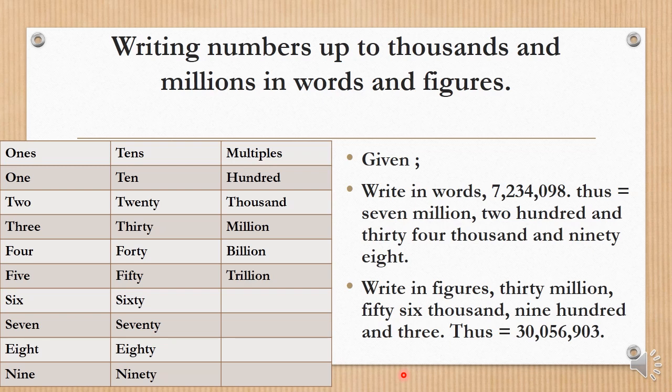Thirty million, you write 30 and put the comma for million. Fifty six thousand. Remember, there is no hundred for the thousand. You have hundreds of thousands, tens of thousands, and units of thousand, but hundreds of thousands are missing, that's why we have zero here for hundreds of thousands. Fifty six thousand, no hundred.